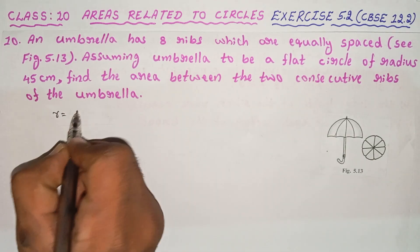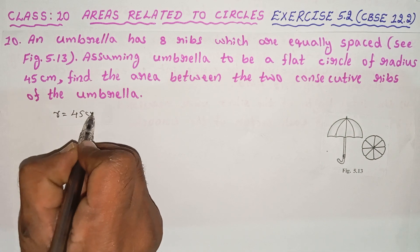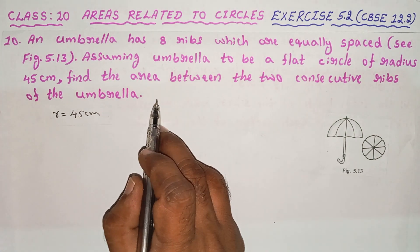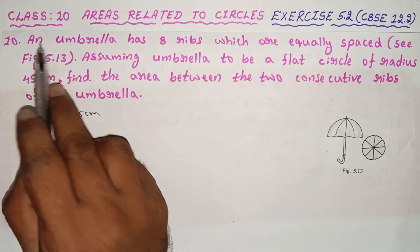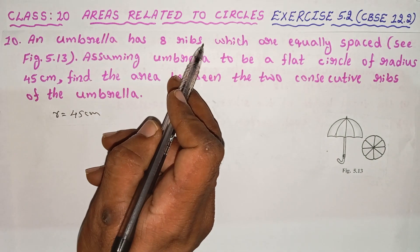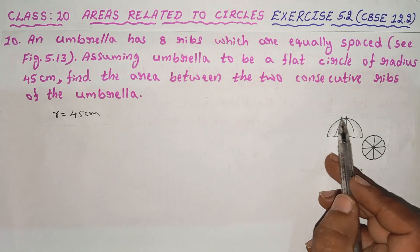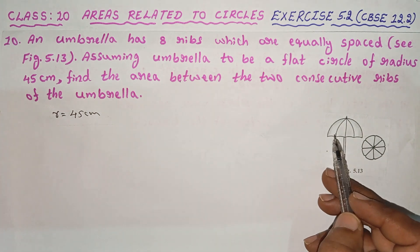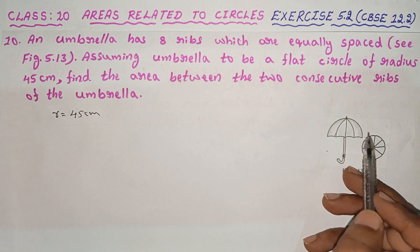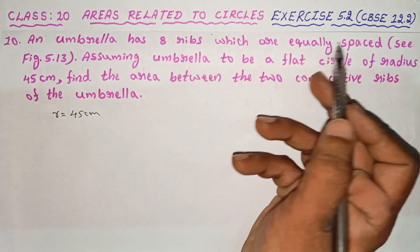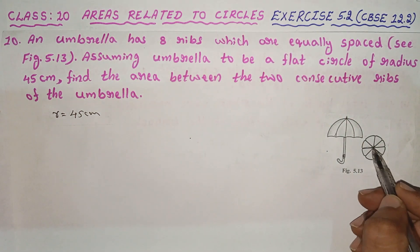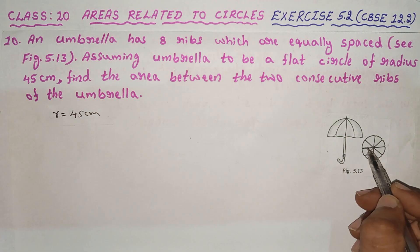Radius is equal to 45 cm. An umbrella has 8 ribs. In the umbrella, there are 8 ribs which are equally spaced.